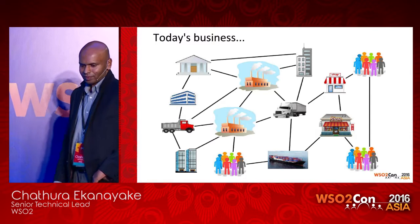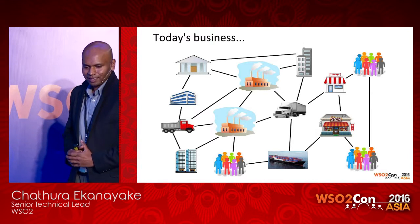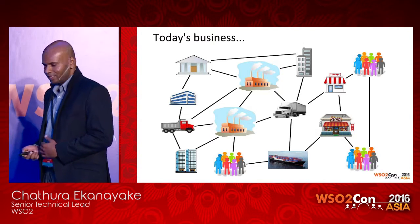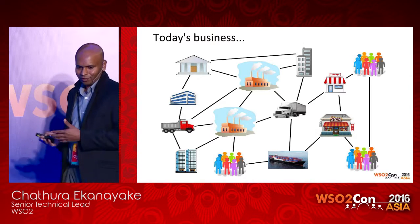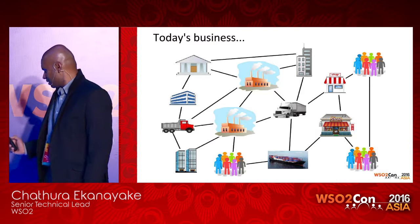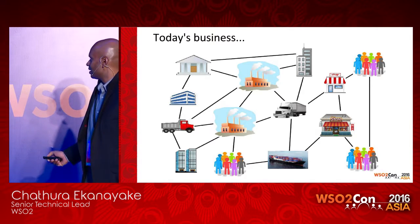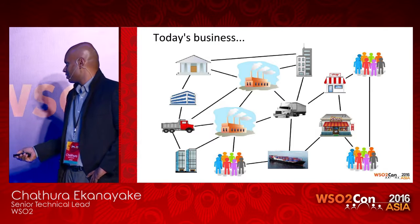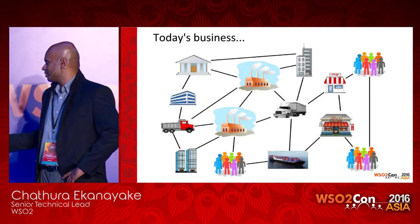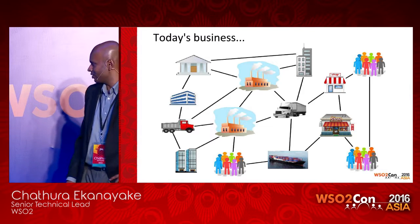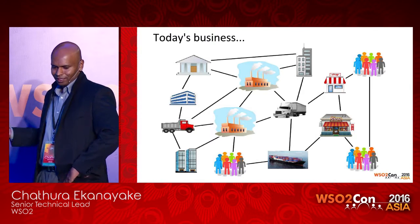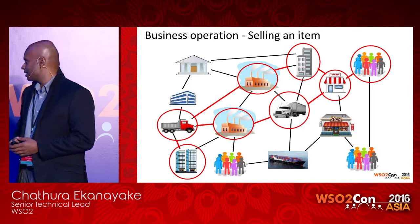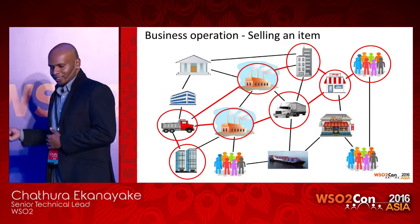Before thinking about business operations, let's consider how a typical business operates in today's environment. In today's business, it's a connection of many organizations and entities. For example, a typical business can have many shopping outlets, many offices, factories, partners, logistics companies, and so on. If we take a simple business operation like selling an item, it may involve many of these entities.